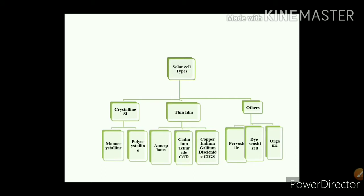Whereas for solar cells, the degree of purity is 9N to 10N. This silicon we call polysilicon, which is nothing but polycrystalline silicon.